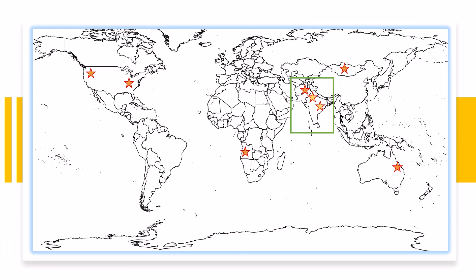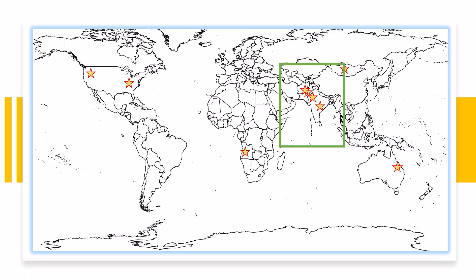However, it can be difficult and expensive if our sample is distributed in a large geographical area. Simple random sampling is preferable when dealing with population in concentrated geographical location and when a good sampling frame exists. A sampling frame is a list of all the people in the population of interest.